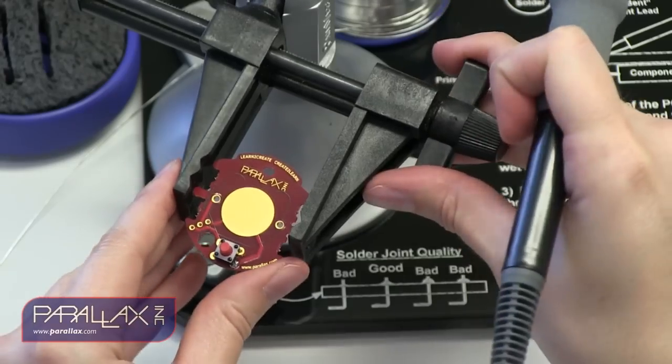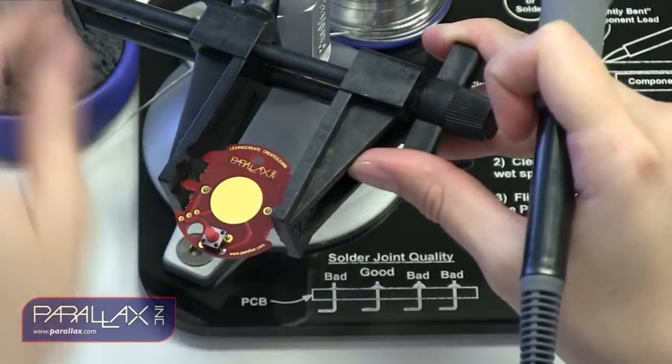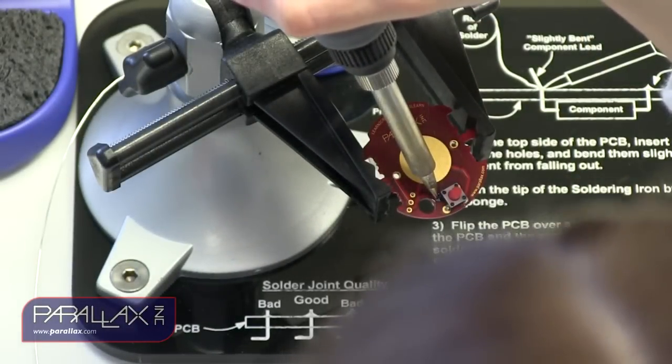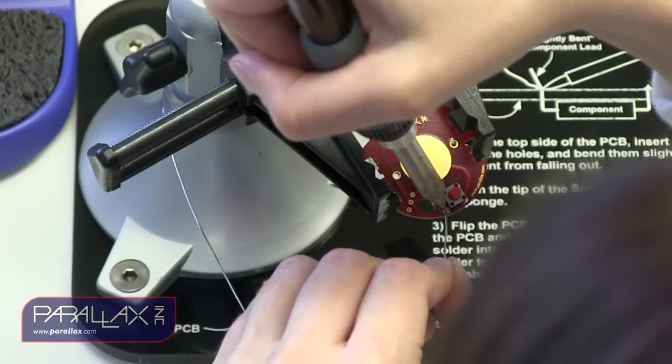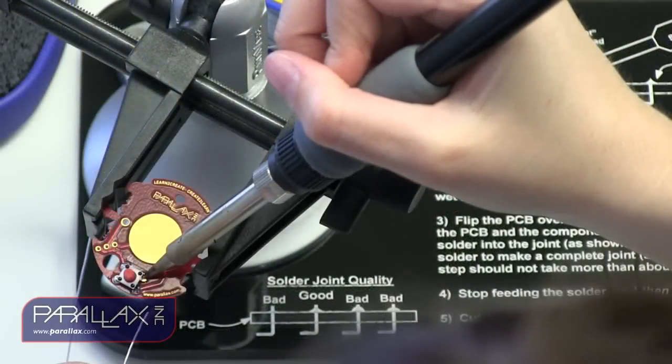Then, inspect the joint and make sure the solder forms a concave joint with the push button lead. If everything looks good, you can continue soldering the remaining pads, starting with the pad located diagonally across from the first joint that you soldered. This makes sure the push button will stay in place as you finish soldering the part.